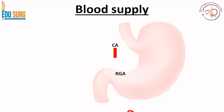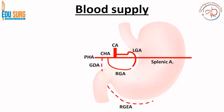Now coming to blood supply of stomach: the major supply comes from the celiac axis. The left gastric artery is usually the direct branch from the celiac axis, then the splenic artery and the common hepatic artery. The common hepatic artery gives the right gastric artery separately, and the gastroduodenal artery, which is a branch of the common hepatic artery, gives rise to the right gastroepiploic artery. So RGEA is the right gastroepiploic artery which is a branch of the gastroduodenal artery, and right gastric artery is usually the direct branch of the right hepatic artery or common hepatic artery.